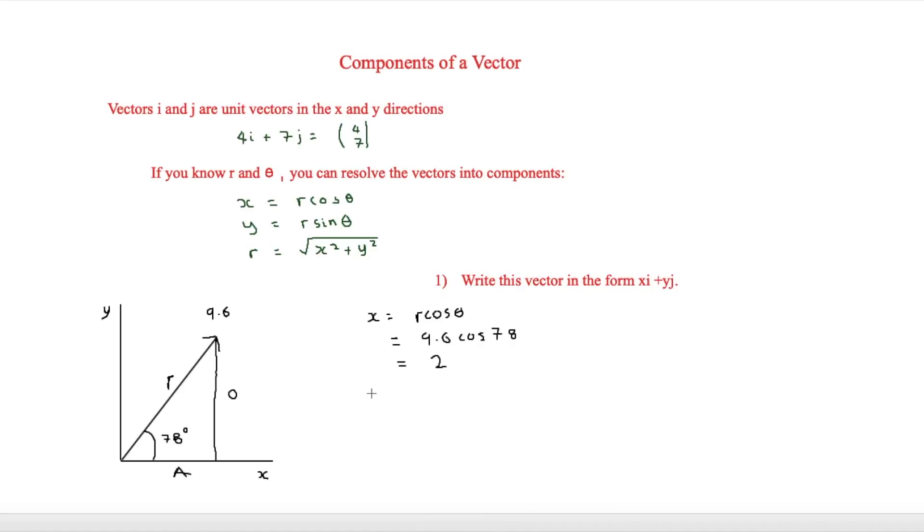Now if we're trying to work out what y is, then we're going to be using r sine theta. So this time, again, r is going to be 9.6. But instead of cos, it's going to be sine 78.